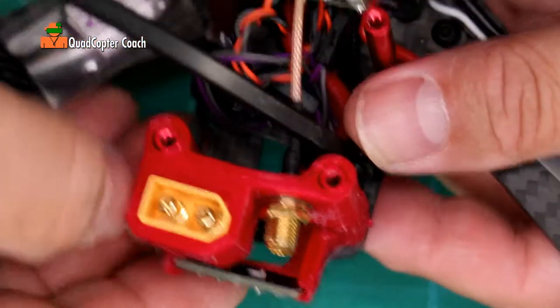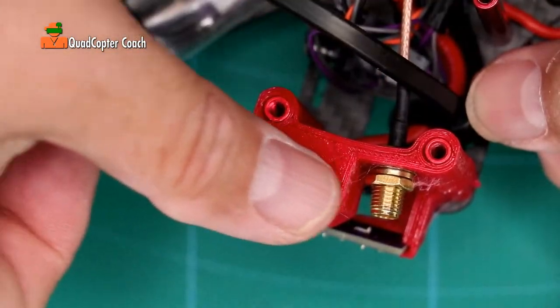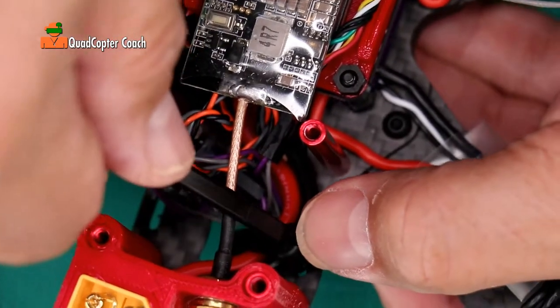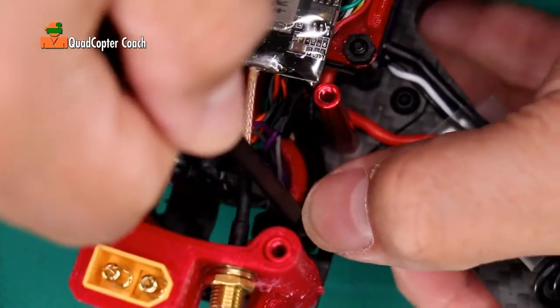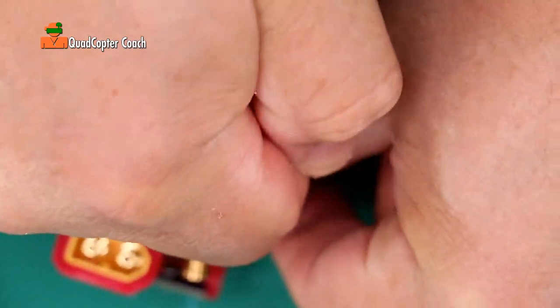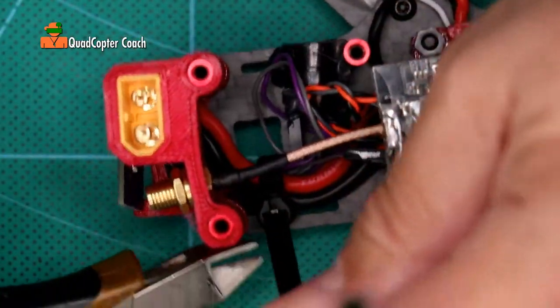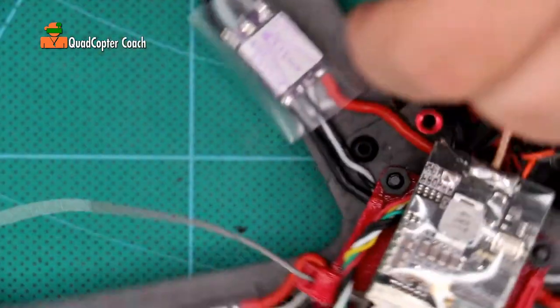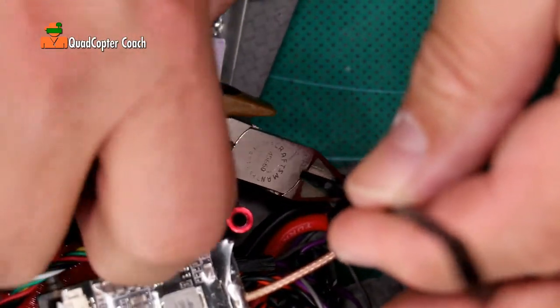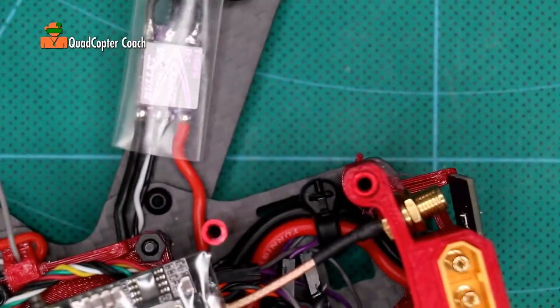When you're done, make sure that your XT60 connector is flush and not recessed, then ratchet that down as far as you can. Take your diagonal cutters and cut the excess off. There we go.